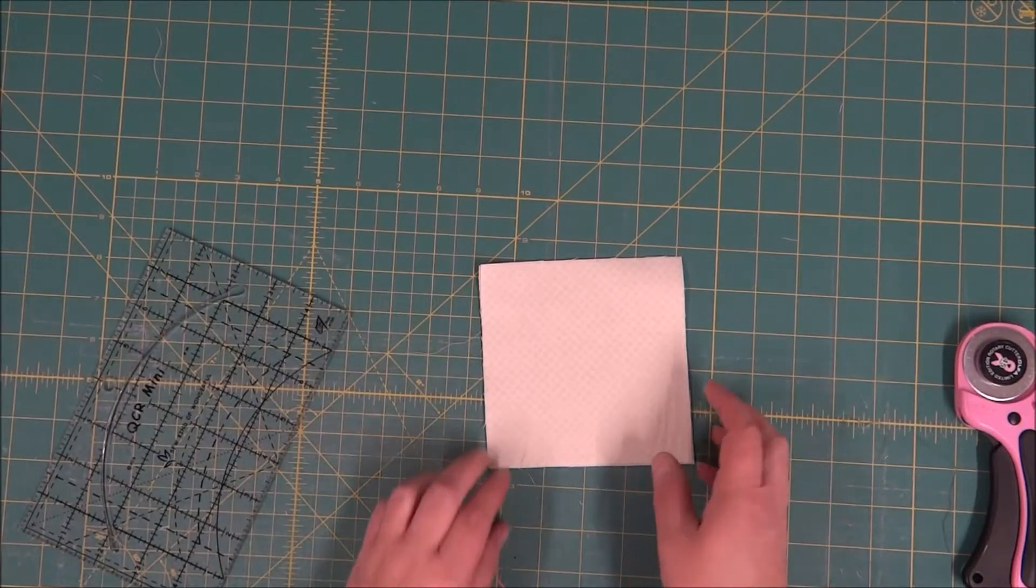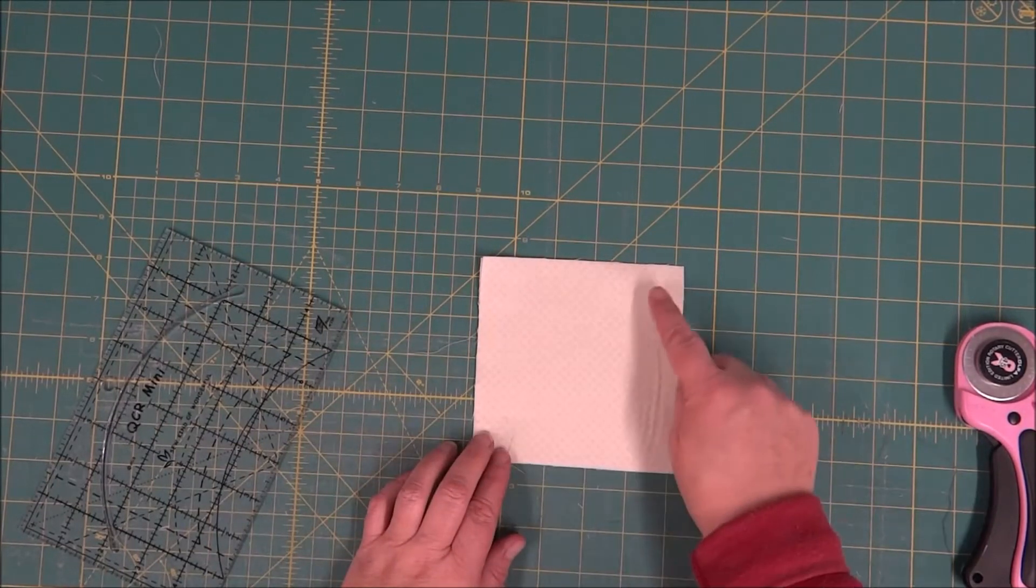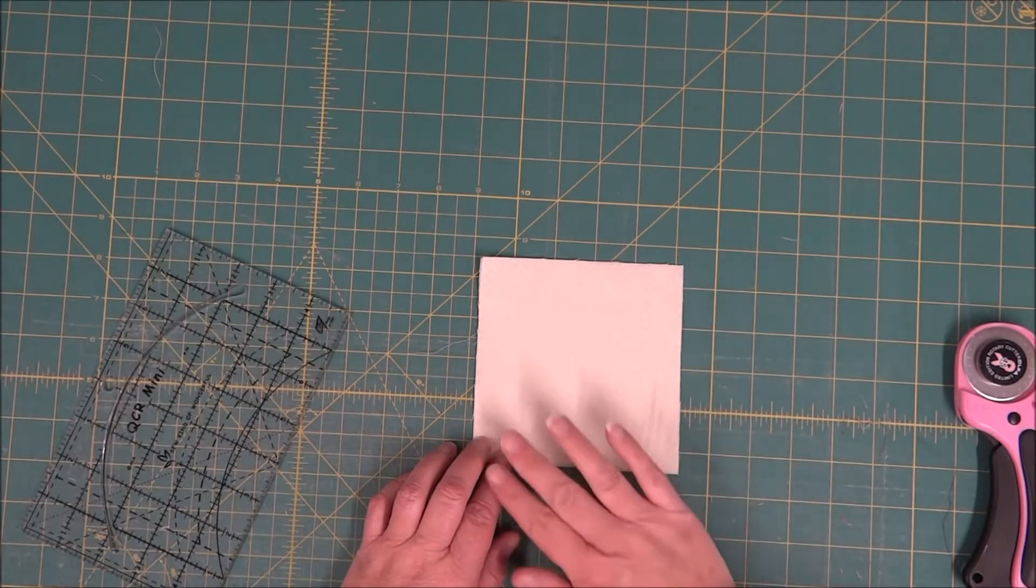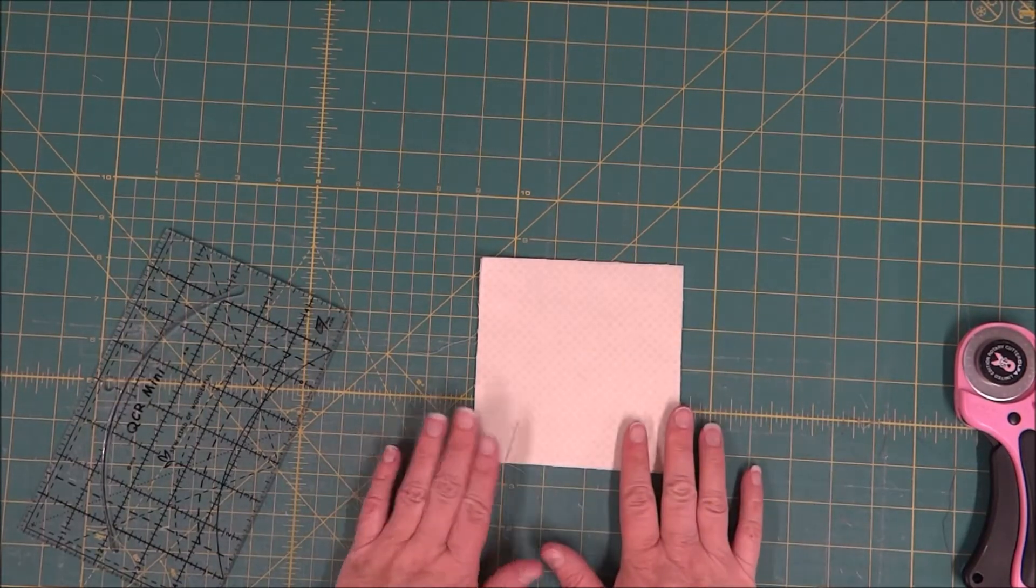For some of our background blocks, we're going to be using both the big piece and the smaller piece in different blocks, just depending on what the layout is.